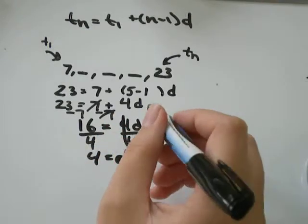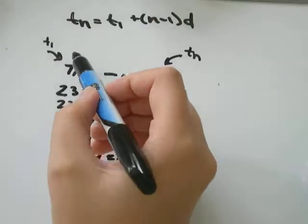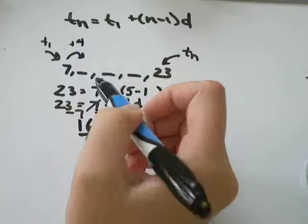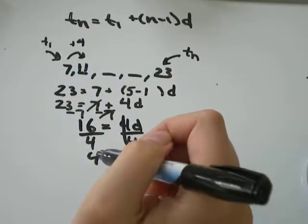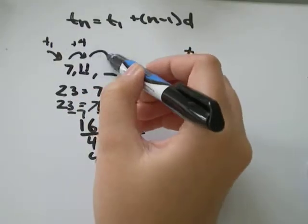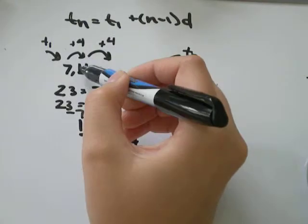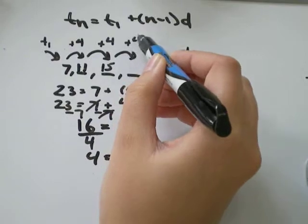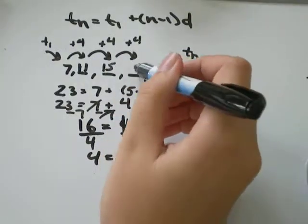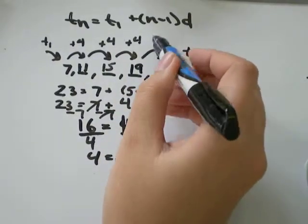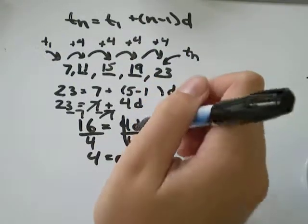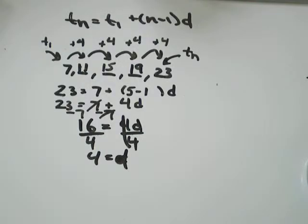So what that tells me is that to get from the first term to the second term, I add 4. 7 plus 4 would be 11. So that's the first of my arithmetic means. I add 4 again. 11 plus 4 would be 15. I add 4 again. 15 plus 4 would be 19. And if I add 4 one more time, do I get to 23? Yeah, I do. So we can feel pretty confident that the answer we got is right.